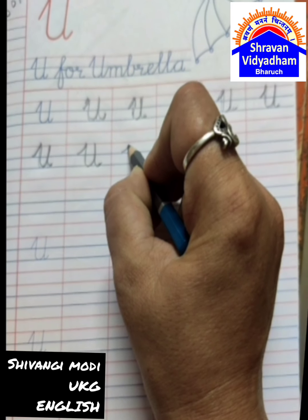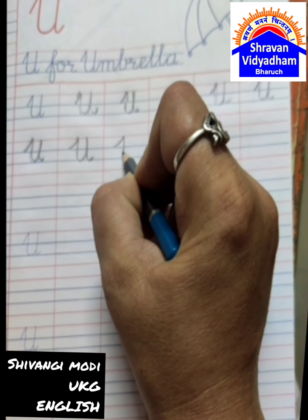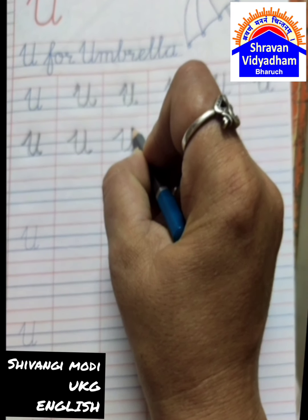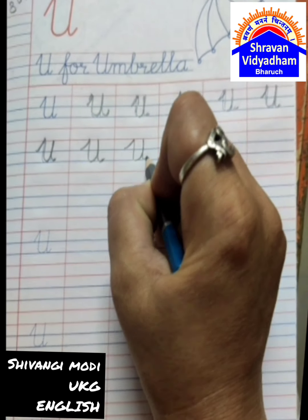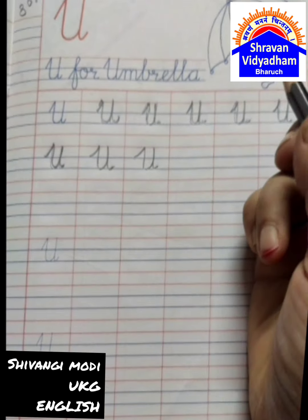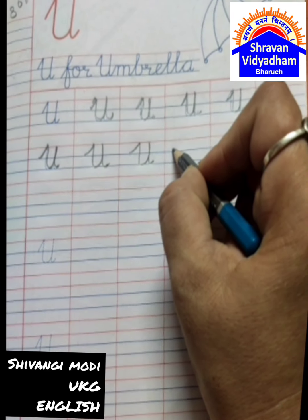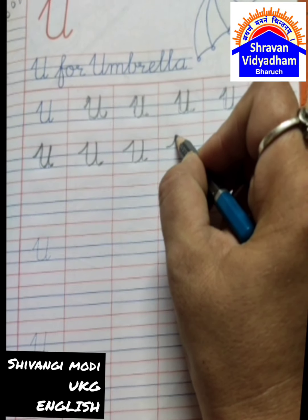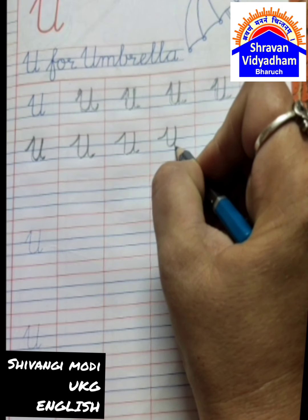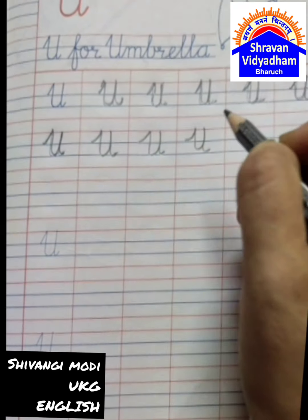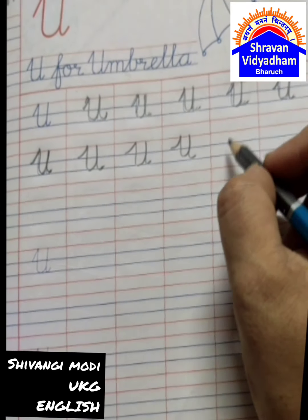Red line to blue line, slanting line, then half curve, then turn — U for Uniform. Slanting line, half curve, then turn — U for Unicorn.